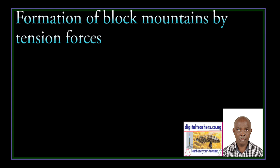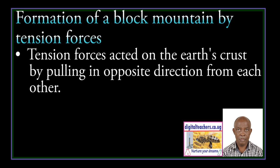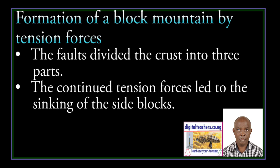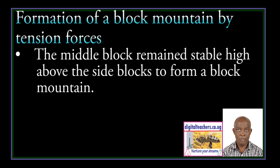Formation of Block Mountain by tension forces. Tension forces acted on the crust by pulling in opposite directions from each other. Fault lines divided the crust into three parts. The continued tension forces lead to the sinking of the side blocks. The middle block remains stable above the side blocks to form a Block Mountain.